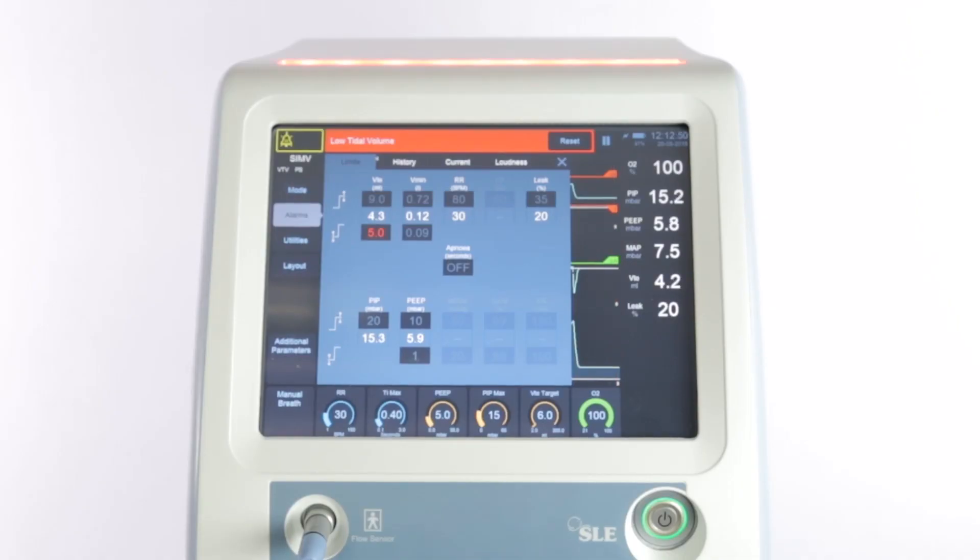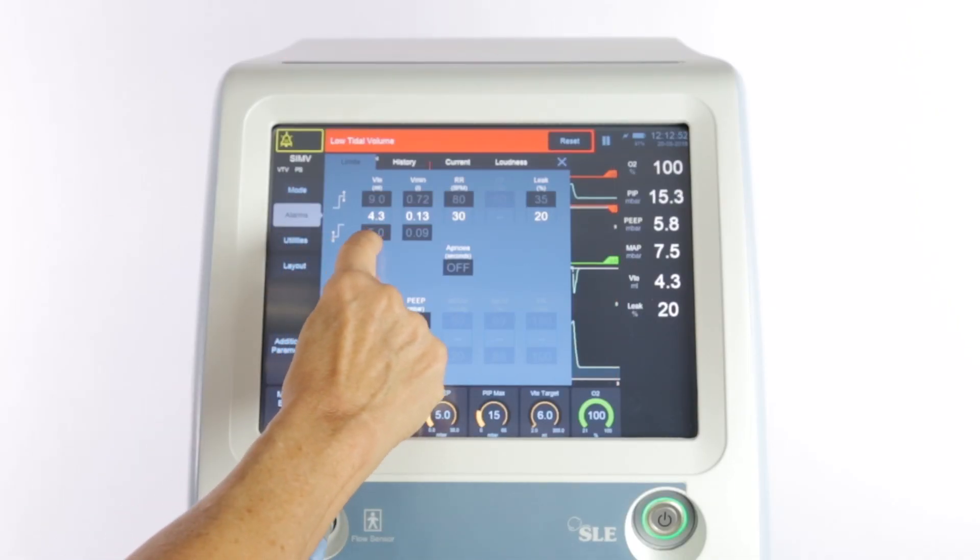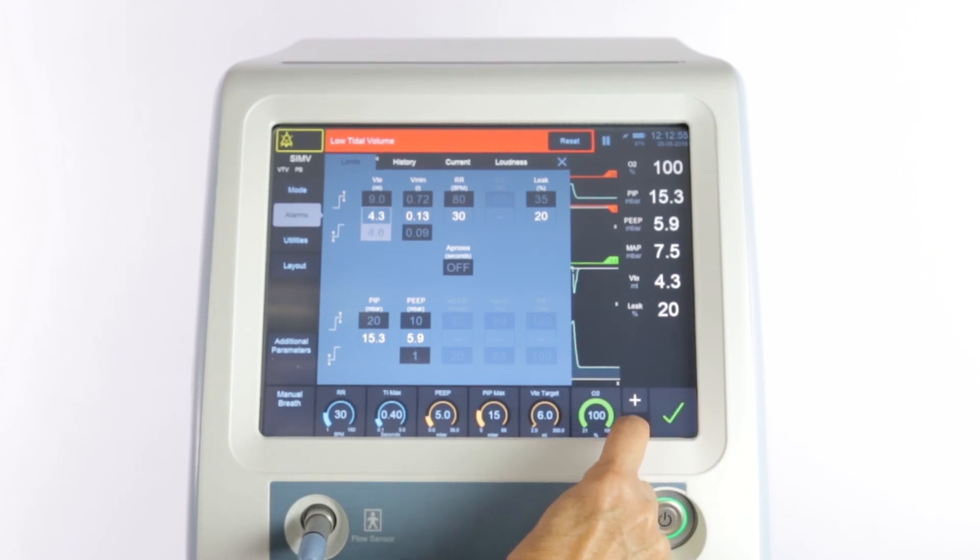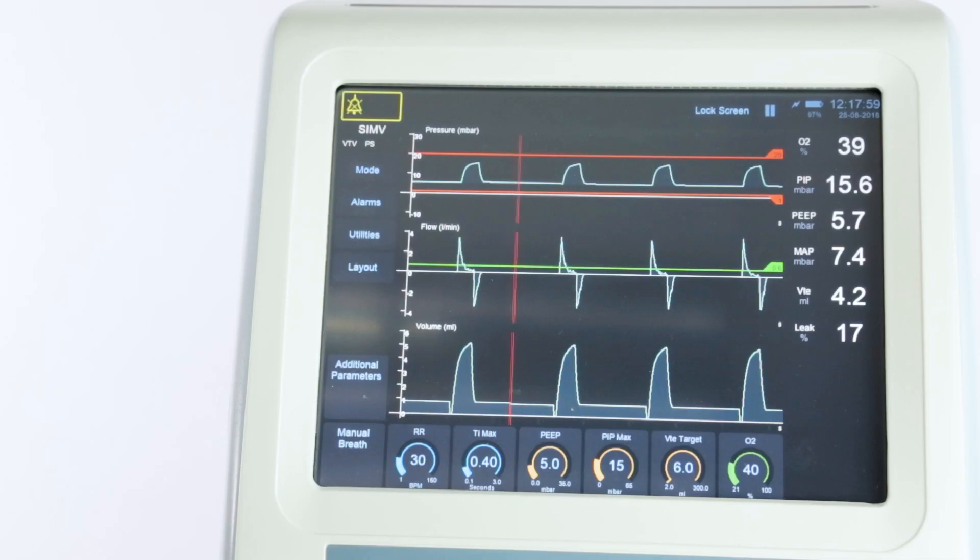Making changes to the alarms is a simple matter of selecting the alarming limit, then once the adjustment buttons appear, modifying it to stop the alarm. Then either press Confirm to accept or the Cross or Alarms button to cancel.